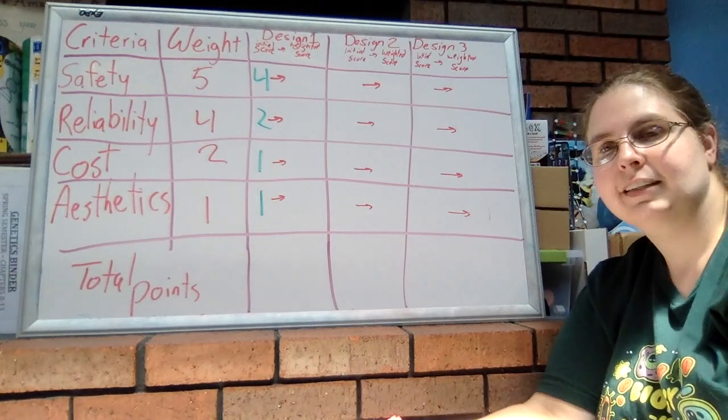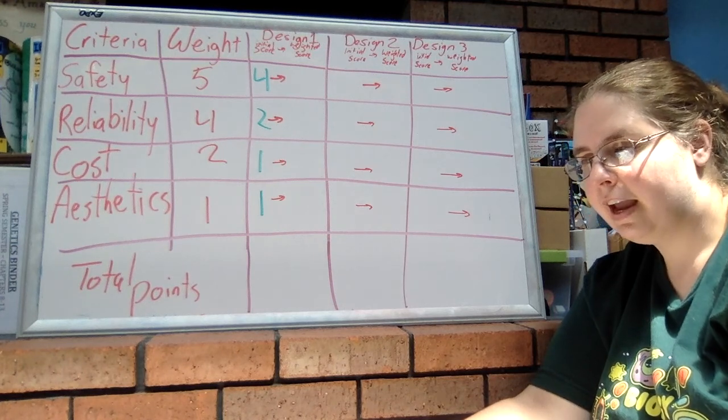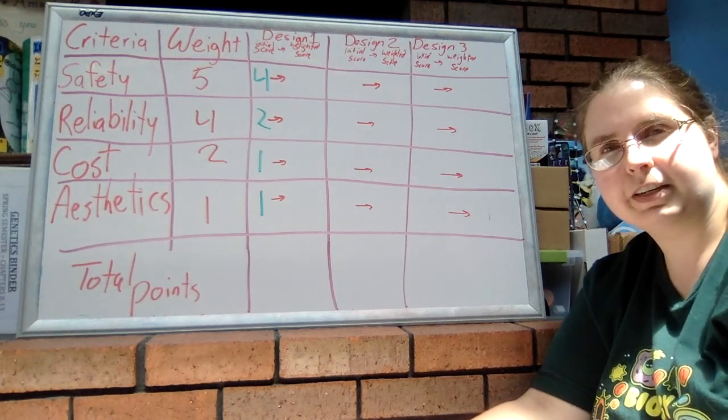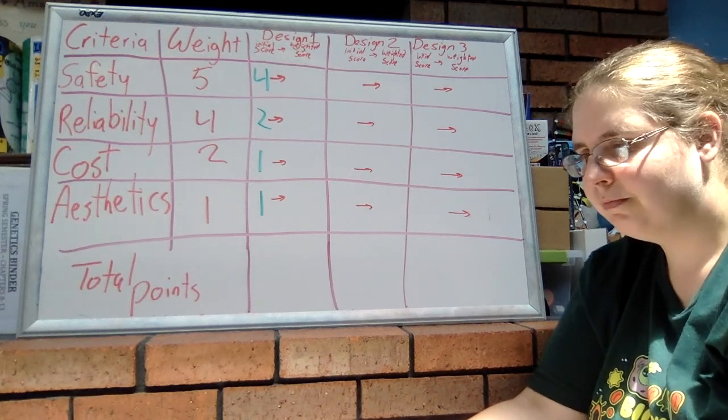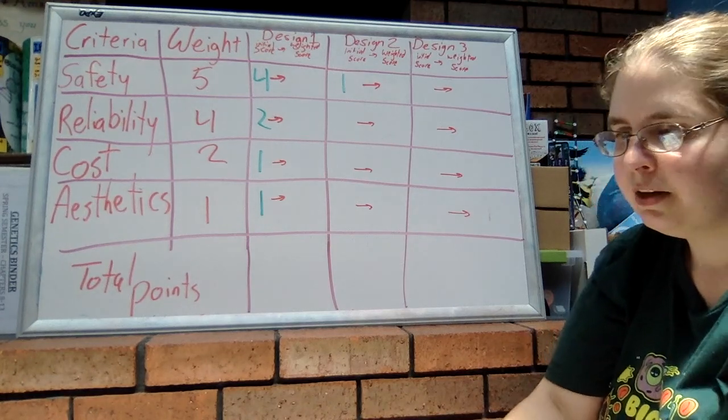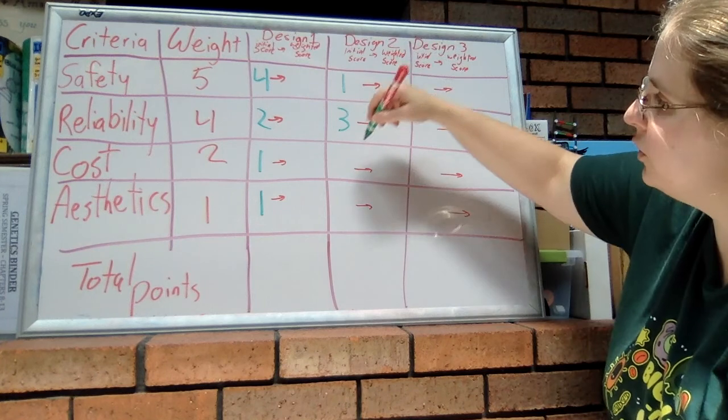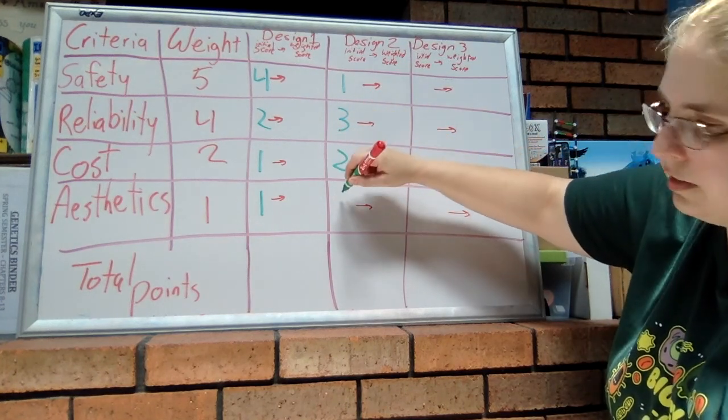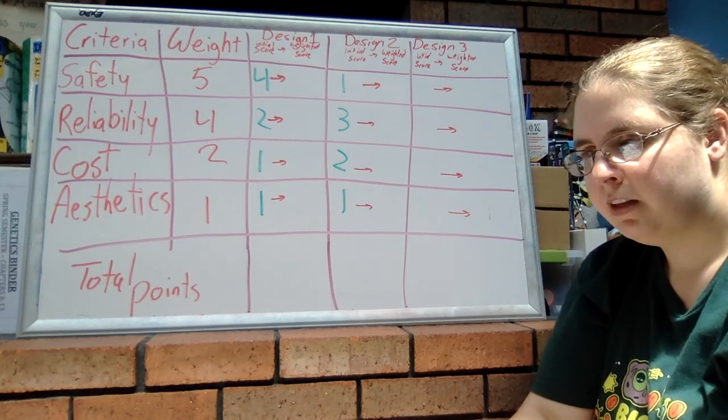For design two, I look at this idea and go through and give it an initial score for each criteria. This one only got a one for safety—again out of a score of one to five—but it got a three for reliability, a two for cost, and just a one for aesthetics.